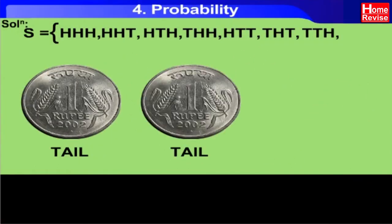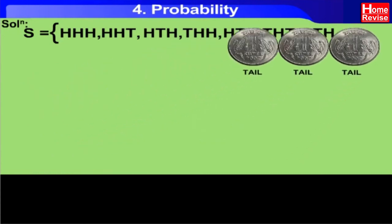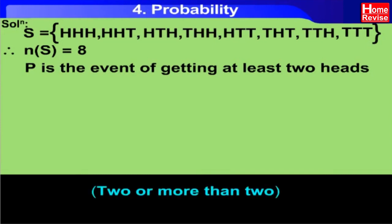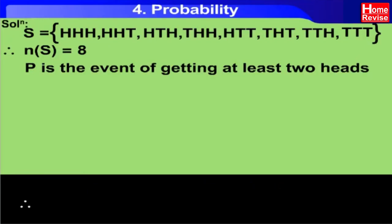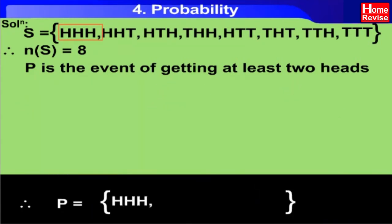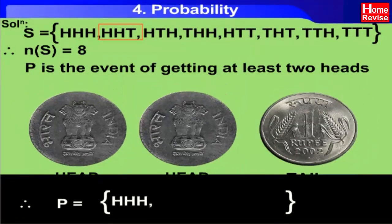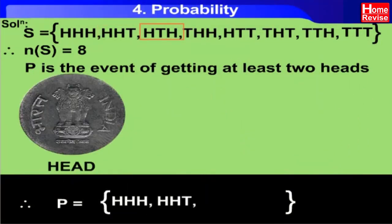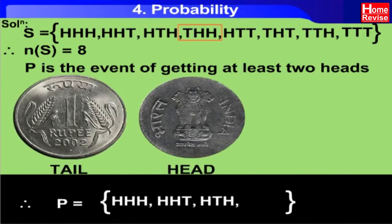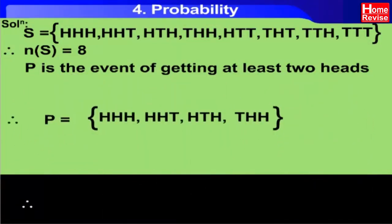...HTT, THT, TTH, TTT }. Now, P is the event of getting at least two heads, that is two or more than two. Therefore, P is equal to { HHH, HHT, HTH, THH }.